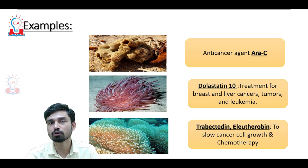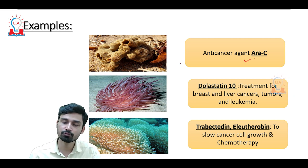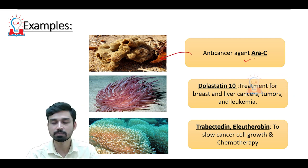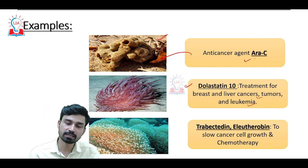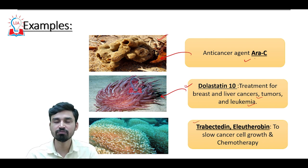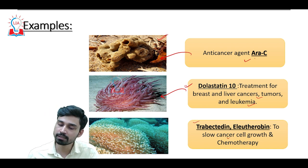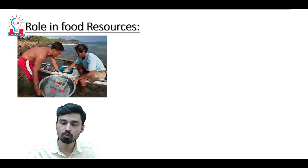Some important examples of coral reef and marine resources helping develop new medicines include: the anti-cancer agent Ara-C, obtained from a sea sponge found in the coastal regions of the Caribbean Sea; dolastatin, used for the treatment of breast and liver cancer tumors and leukemia, found from substances called sea fans or sea whips; and trabectedin and eleutherobin, compounds very important for slowing down cancer cell growth and used in treatments such as chemotherapy, also derived from coral resources.